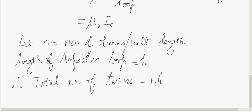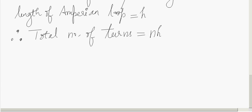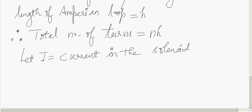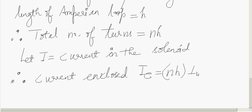Let I be the current in the solenoid. Therefore, then the current enclosed will be equal to current enclosed in the loop or in that amperian loop, IE will be equal to the total number of turns multiplied by current, NH into I.